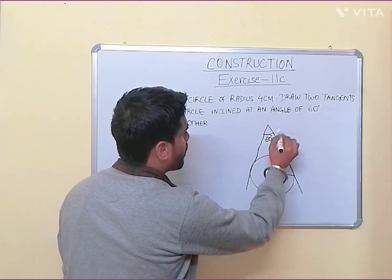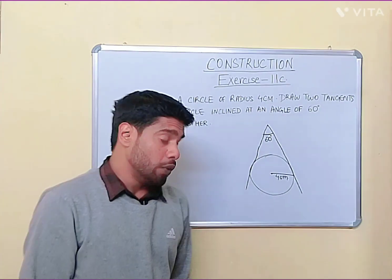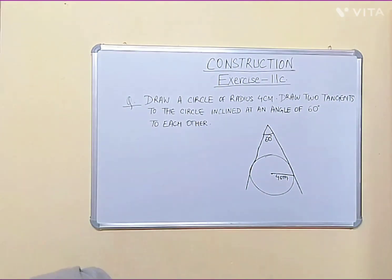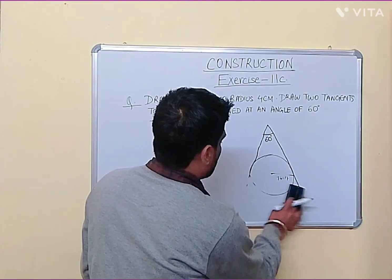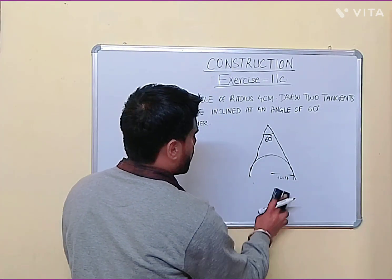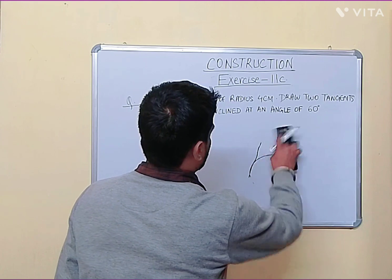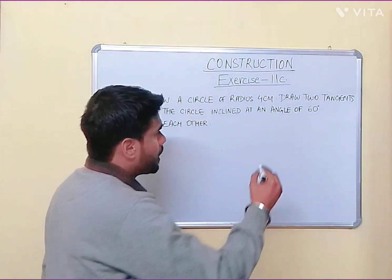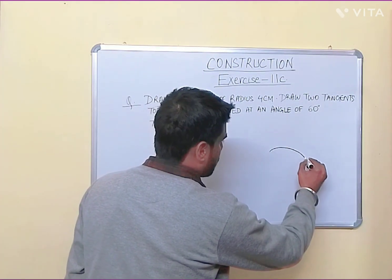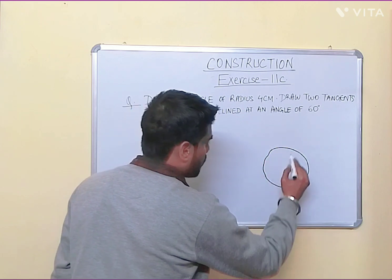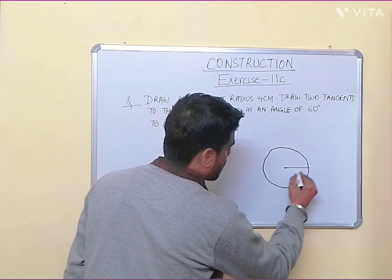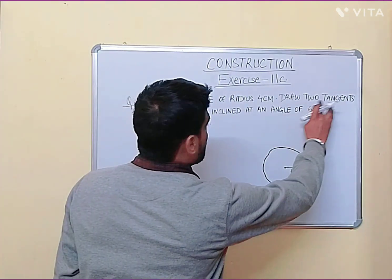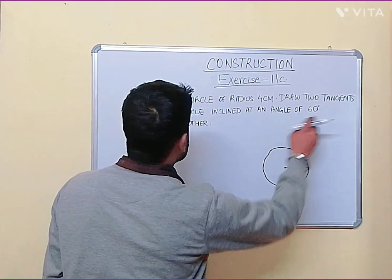First, take a compass and measure 4 centimeters with the help of a scale. After measuring, draw a circle nicely with the compass using radius 4 centimeters. Now, they have said draw two tangents to the circle inclined at an angle of 60 degrees to each other.